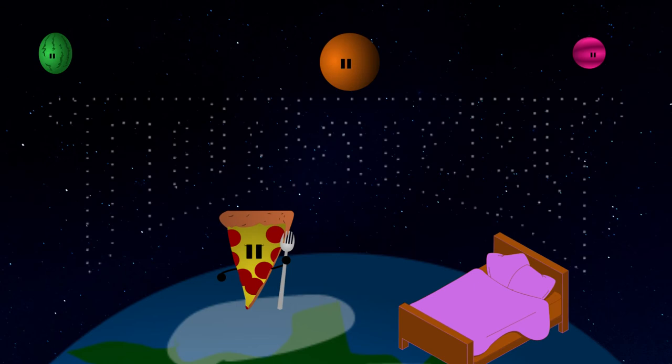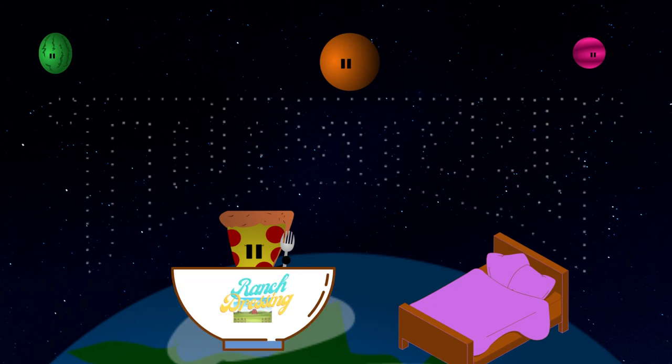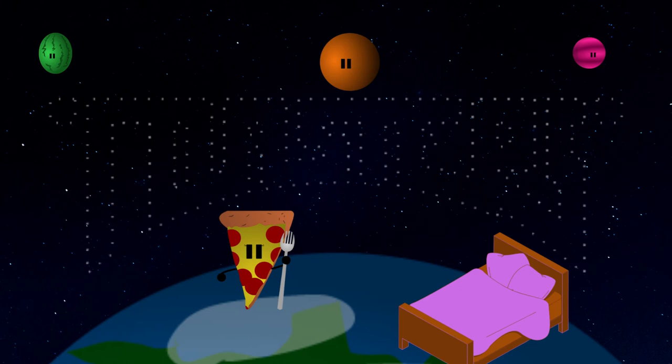Next, Pease wants a quick dip in ranch dressing before bed. All right, Pease. You may take a tiny dip into the ranch dressing before bed. But Pease wants a little more ranch. Okay, just one more dip, Pease. But then, it's time for bed.